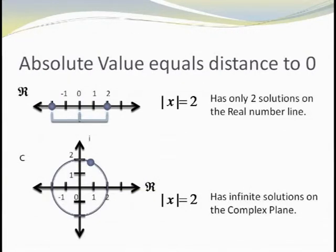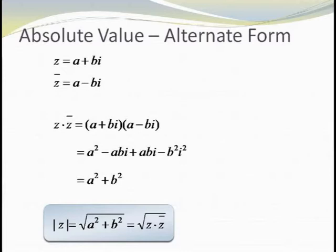There are some big differences between the absolute value of real numbers and complex numbers. For real numbers, if we had the equation |x| equals 2, there would be only two numbers a distance 2 away from 0: x equals 2 and x equals minus 2. But for complex numbers, there's an infinite number of points that are a distance 2 away from the origin — any point on the circle with radius 2. There is also an alternate form: if z equals a plus bi, then z times the conjugate of z equals a squared plus b squared, so the absolute value of z equals the square root of z times the conjugate of z.